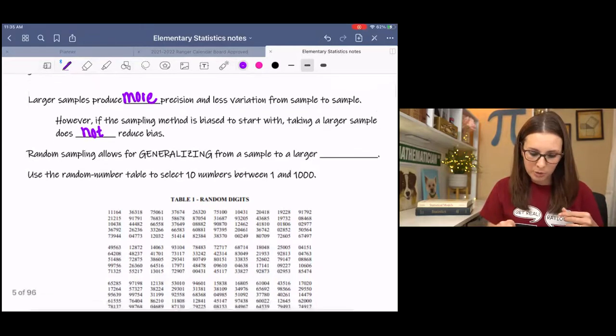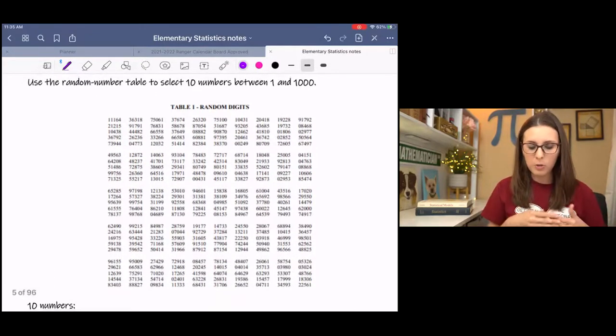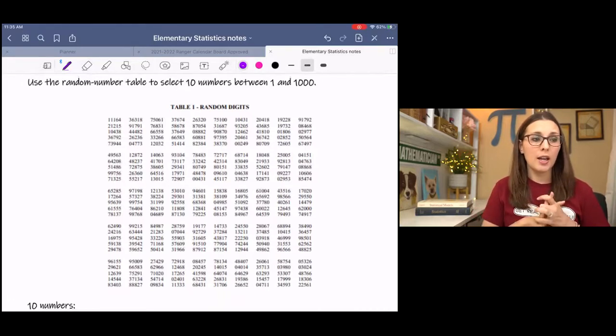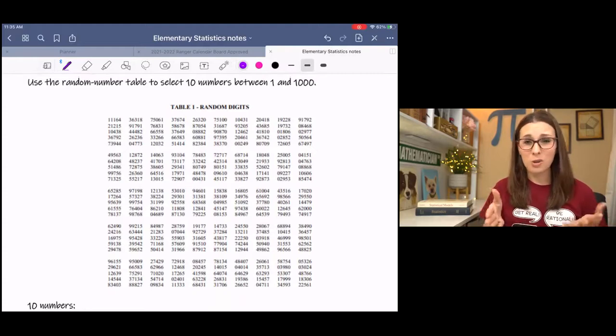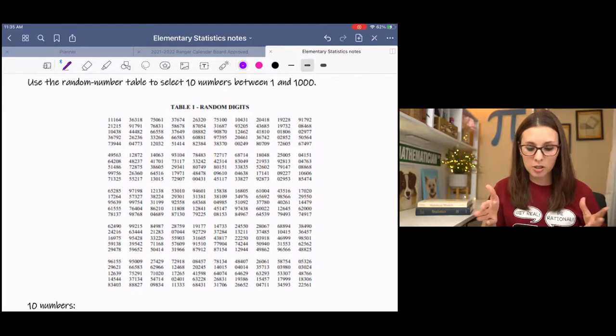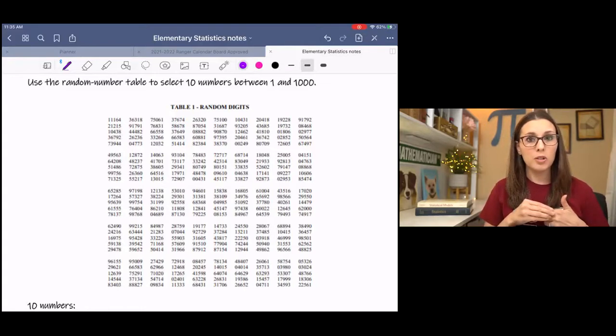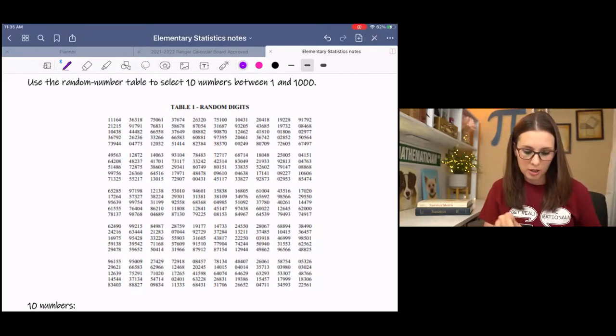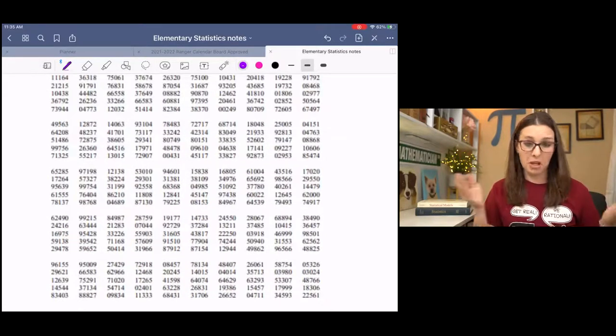I have an example of a random number table here. There should be one in your textbook. It's like a glossy page, usually. And that's what you're usually going to use. But if you don't have that, you can Google this random number table. There's lots of them in the images. I pulled this from Google Images. Also, usually in your homework system, there's one that you can pull up to use.